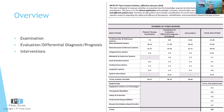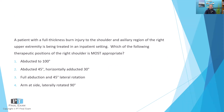As per usual, I will read to you the question, give you a moment to respond, and then we'll talk about the answer together. So: a patient with a full thickness burn injury to the shoulder and axillary region of the right upper extremity is being treated in an inpatient setting. Which of the following therapeutic positions of the right shoulder is most appropriate?